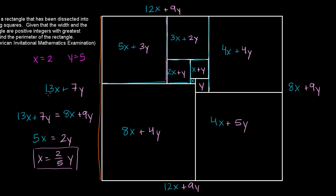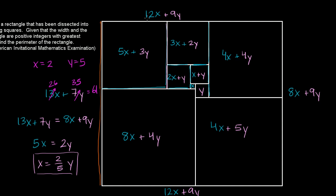So let's see what we get for the dimensions of this rectangle. The height of this rectangle is going to be 13 times 2 is 26 plus 7 times 5 is 35, so 26 plus 35 gets us to 61. And when you look at its width, you have 12x, which is 24, plus 9y, which is 45. So 24 plus 45 is 69. And 61 and 69 do not share any common divisors other than 1.